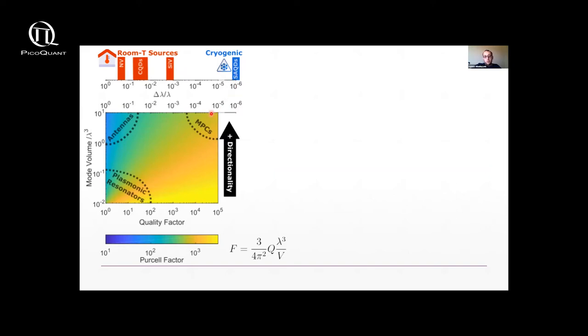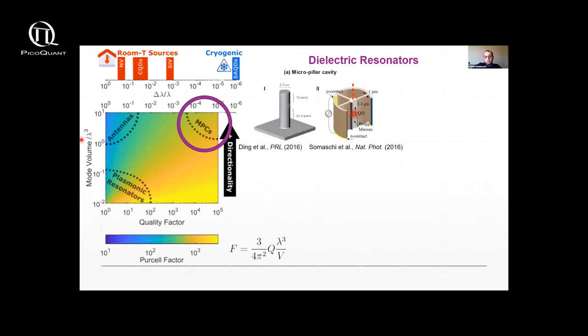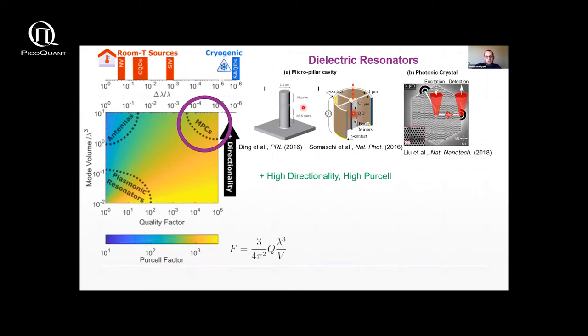Now there are several regions here which are of great interest. The first region would be this top right corner which belongs to the area of dielectric resonators. Here you have high quality factors and large mode volumes. Simple structures include micropillar cavities and photonic crystal cavities. Because of the large mode volume you can get very high directionalities and because of the high quality factors you can get high Purcell factors in the same structure.